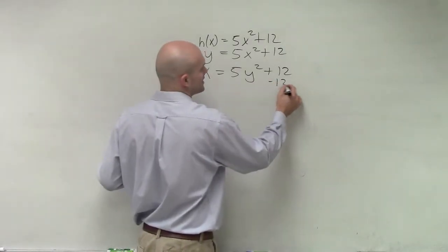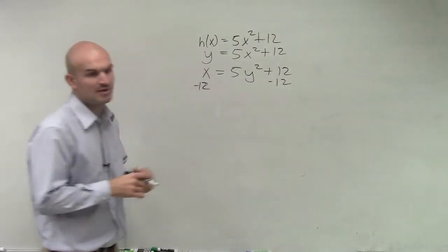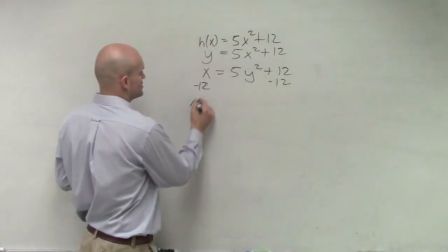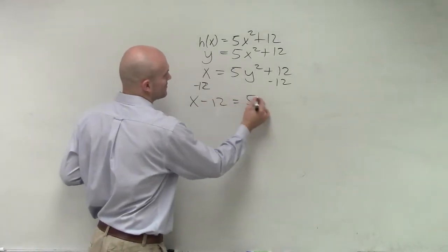The first inverse operation is I need to undo the addition by using the subtraction property of equality on both sides. So I get x - 12 = 5y².